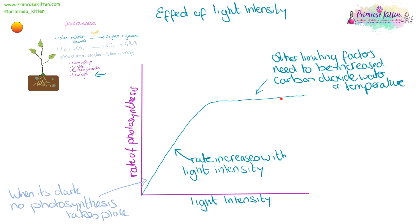Even though the graph is flat at the top, it looks like photosynthesis might have stopped — but it hasn't. There is still a steady rate of photosynthesis; it's just not increasing as much as it was before. It's just a steady rate.